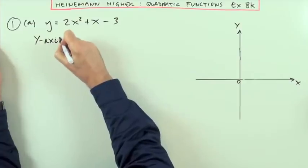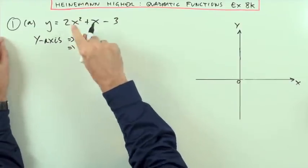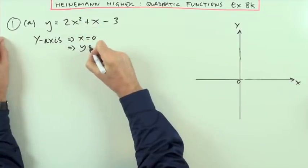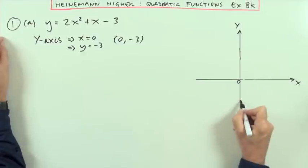So, y-axis first of all. If you're on the y-axis, your x coordinate is 0, and if the x's are 0, that means y is going to be negative 3. So straight away, it cuts at 0, negative 3, somewhere about here.